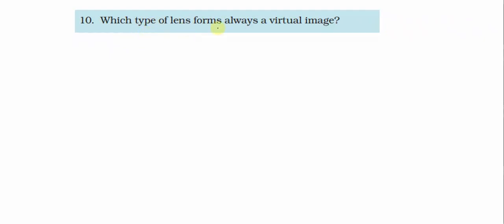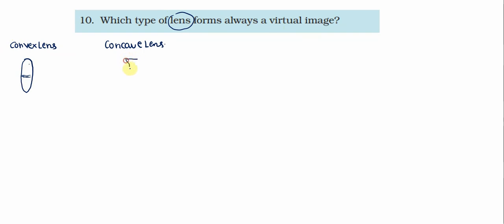Which type of lens forms a virtual image? Lenses ki baat karayin — we have convex lens and we have concave lens. Convex lens humara converging lens hota hain, thick at the center, thin at the edges. And iske opposite, concave lens humara aisa hota hain — thin at the center, thick at the edges. So this is my converging lens and this is the diverging lens.